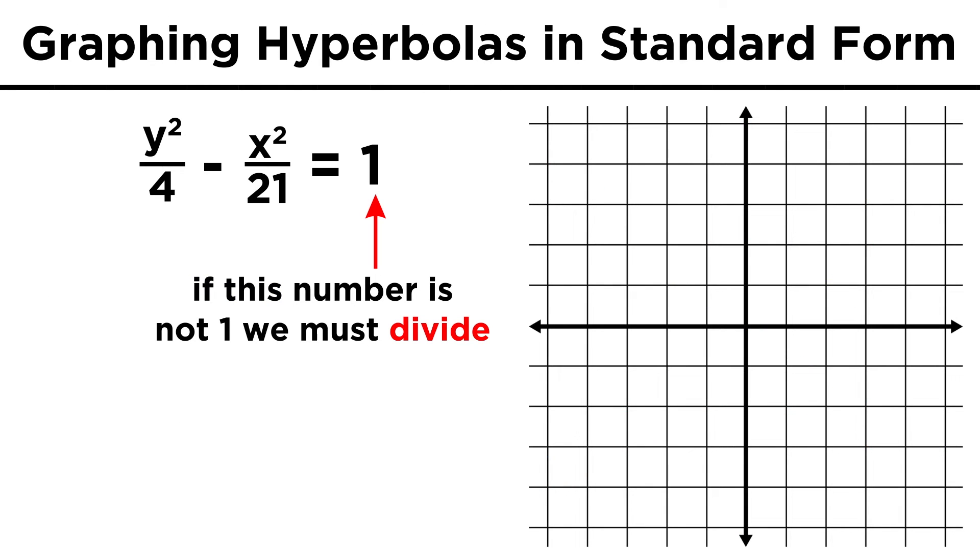Again, if a hyperbola is not in standard form because this number is not one, we just divide through by that number to get rid of it.